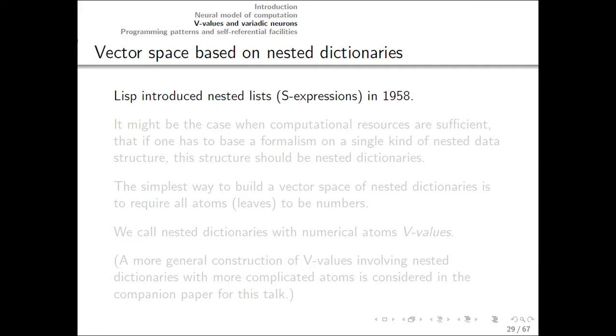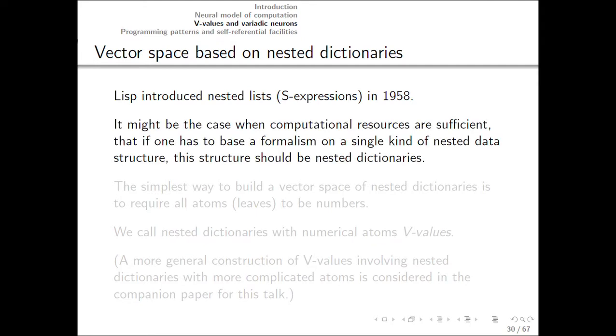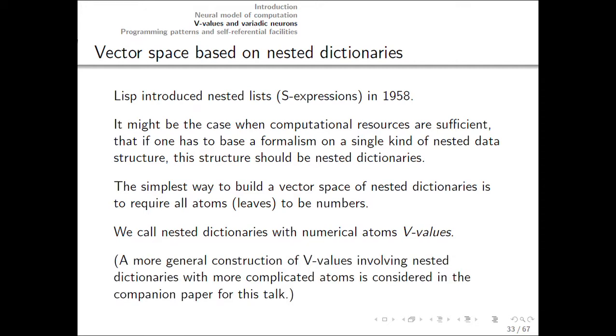So, speaking in terms of vector space of nested dictionaries, Lisp introduced nested lists as expressions. But the hardware was very weak. If the hardware back then was stronger, they might have chosen nested dictionaries instead, which are more flexible, though more demanding hardware-wise. And it is easy to build a vector space out of them. The easiest way is to require that all atoms are numbers. We call the nested dictionaries with numerical atoms V-values. And a more general construction exists, see the companion paper for it.